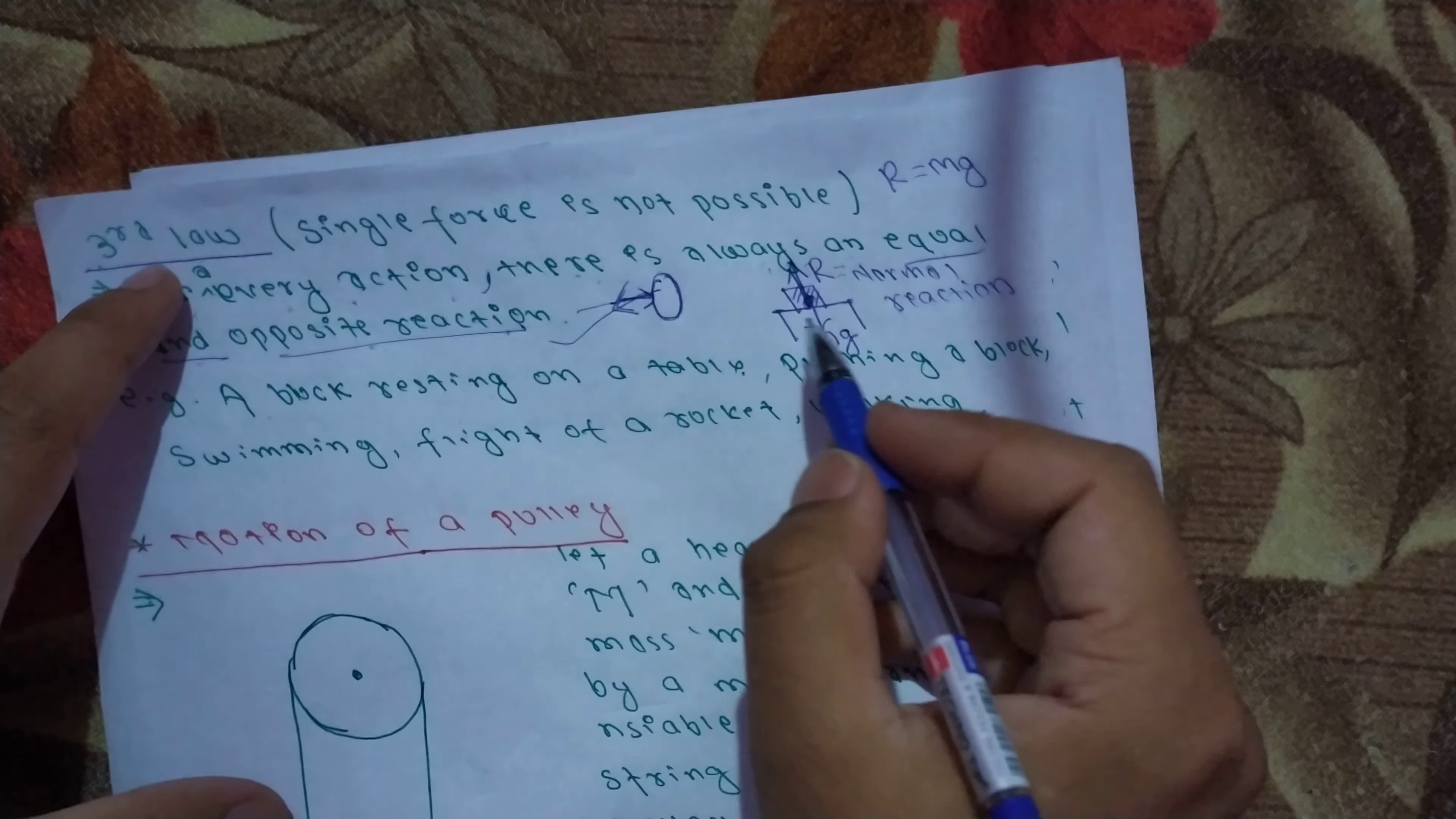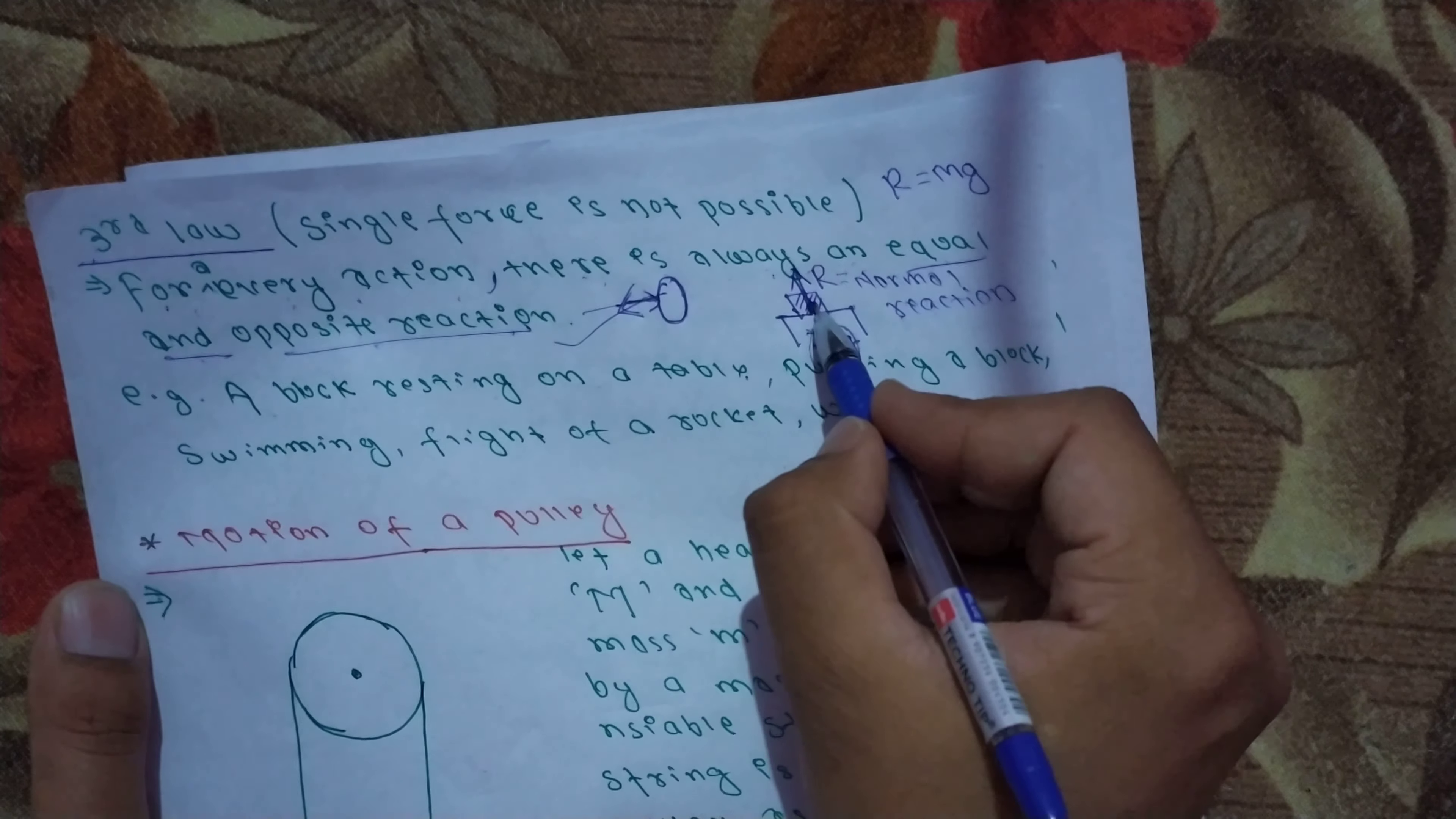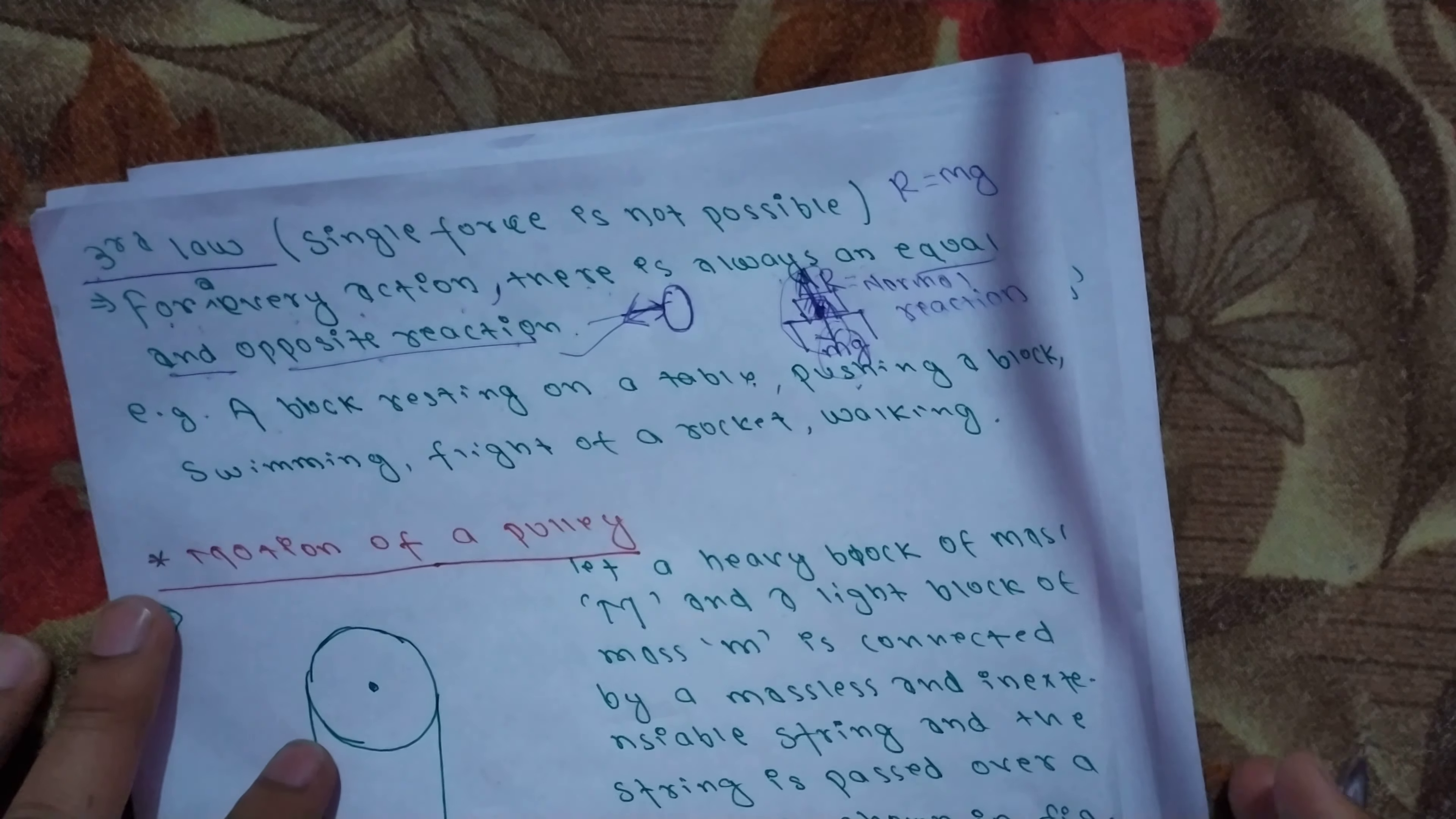The body is at rest. Gravity pulls down, and normal reaction pushes up. Normal reaction equals mg. These forces are equal and opposite, so the net force is zero.